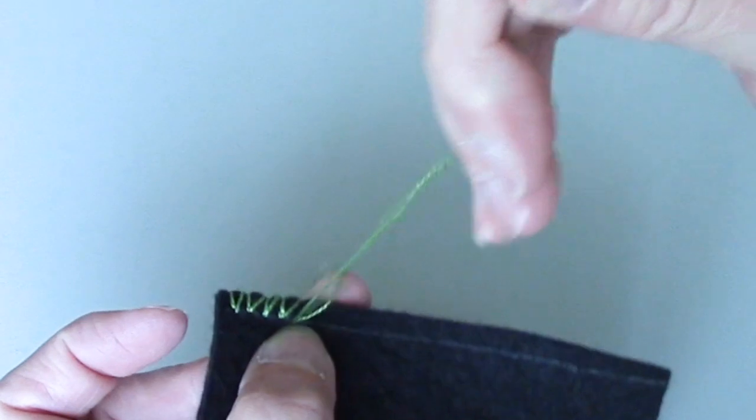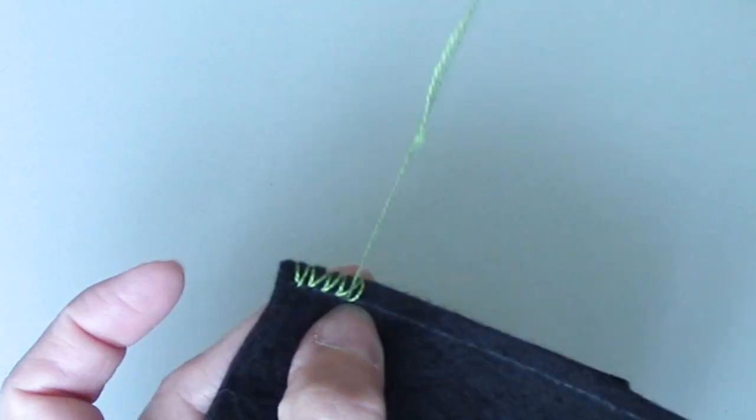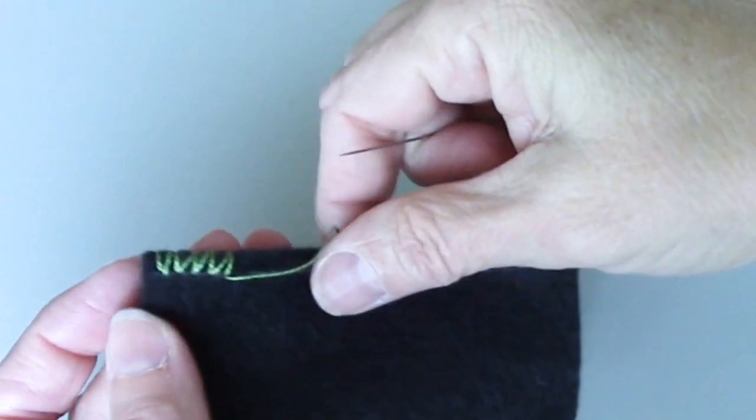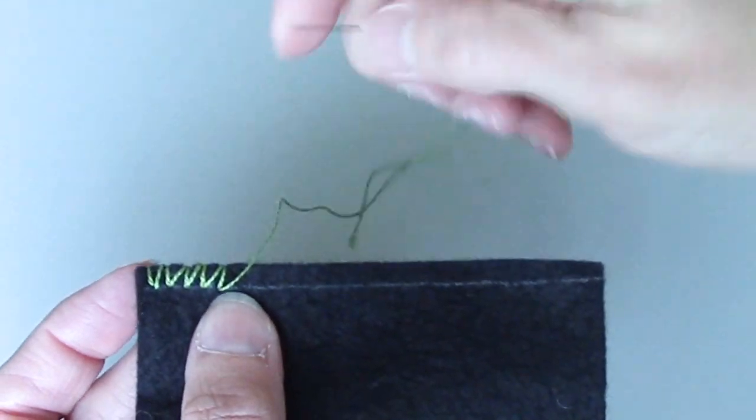So I'm always wrapping the thread over the edge of the fabric. It's basically making a zigzag up there, to the right.